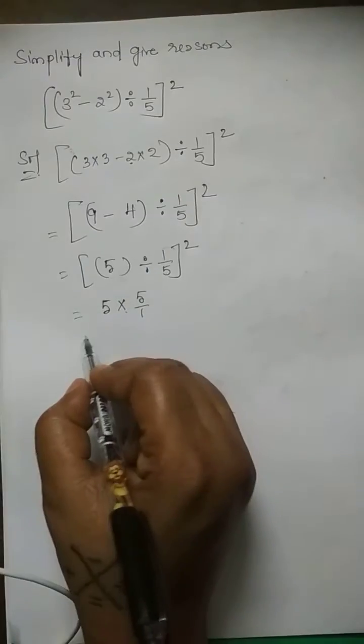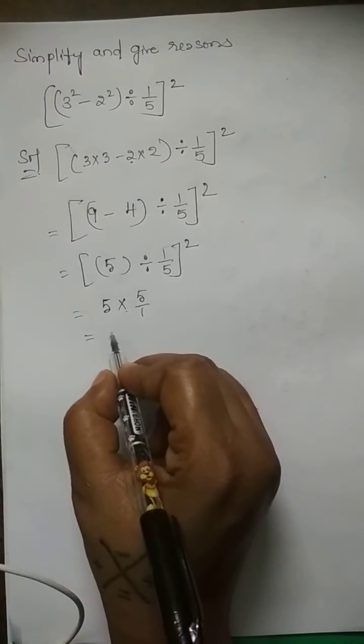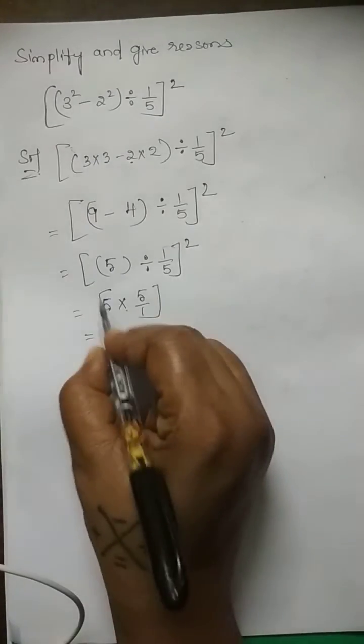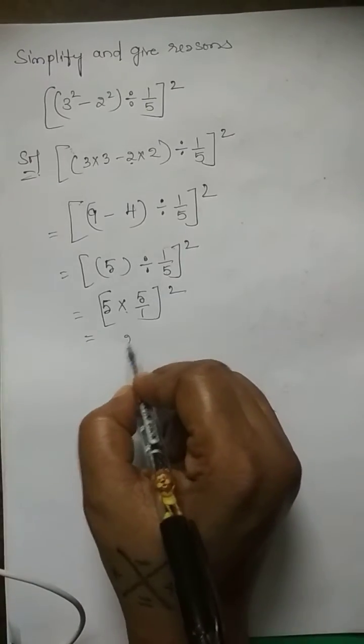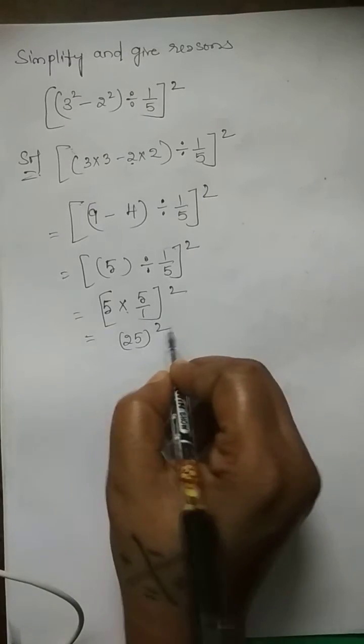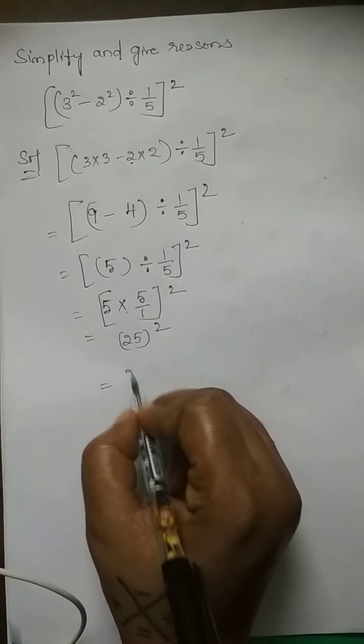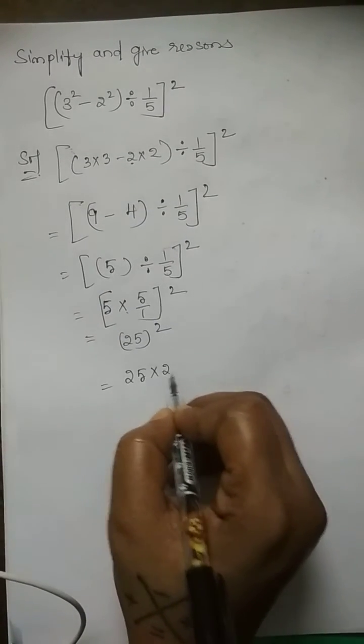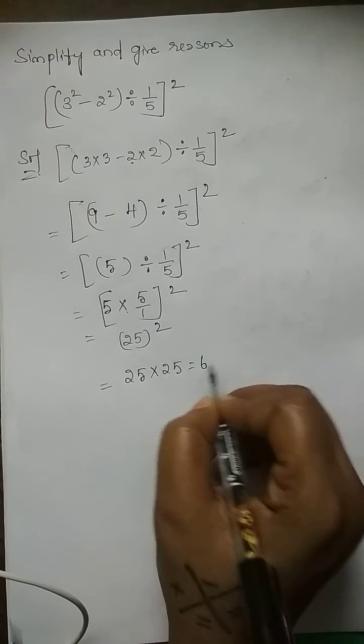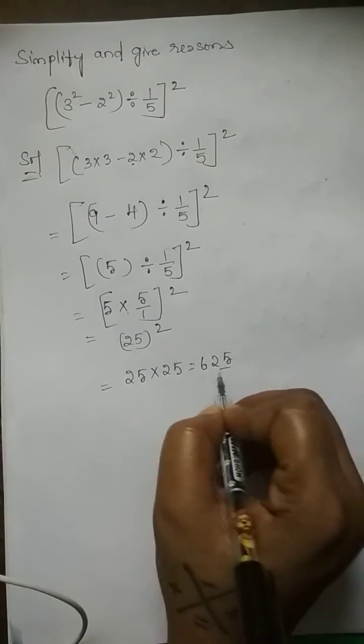That means 5 times 5 is 25. That means 25 whole squared. Therefore 25 whole squared, 25 into 25 we can write, that is 625 is our answer.